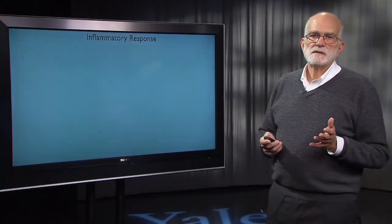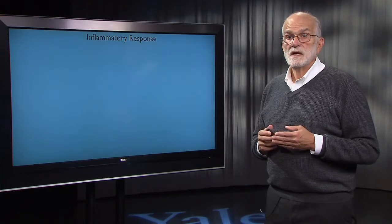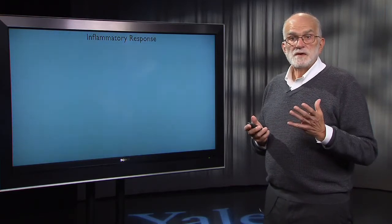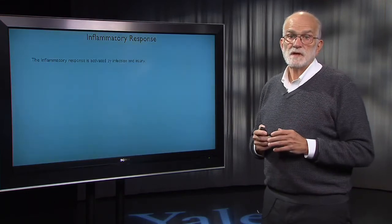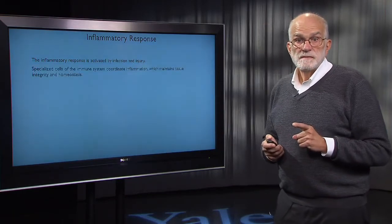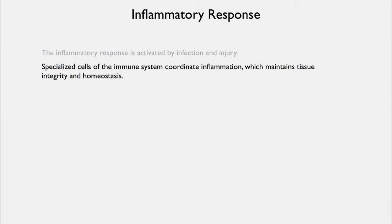Then we come to the inflammatory response. As we go on through these lectures, you'll see that inflammation is part of a mechanism that mediates trade-offs all over the body and for many different diseases. It's activated by infection and injury. There are specialized cells in the immune system that coordinate inflammation, which helps maintain tissue integrity and homeostasis. Basically, inflammation is a signal of local pathogen invasion or tissue damage, and it causes blood vessels to loosen up so that repair cells can get out into the tissue.